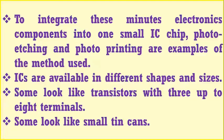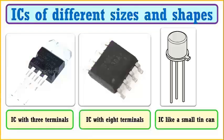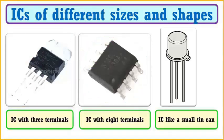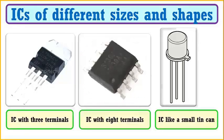Some look like transistors with 3 up to 8 terminals. Some look like small tin cans. This is an example of an IC with 3 terminals. Then we have IC with 8 terminals, and the last one is an IC like a small tin can.